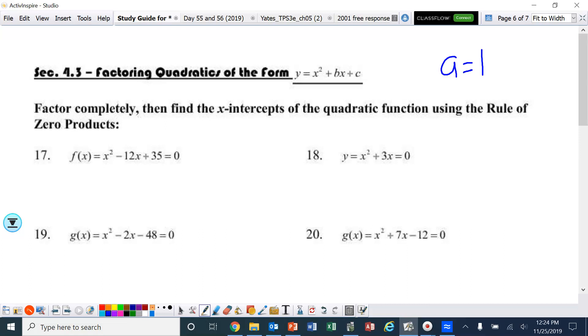We're going to factor and then find the intercepts using the rule of zero products. All right, so let's factor this. Factors of 35 that will add up to negative 12. Well, 5 and 7 make 35, but that's a negative 12, so it's got to be negative 5 and negative 7. All right, so x minus 5 and x minus 7.